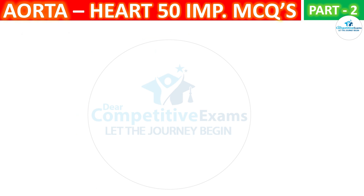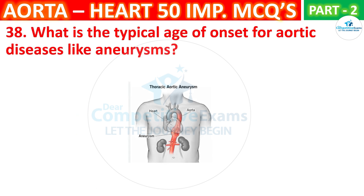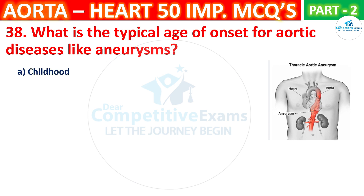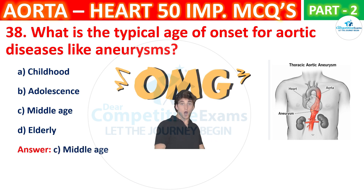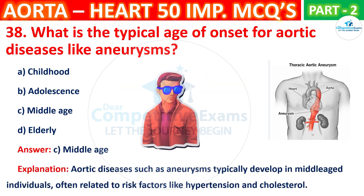Question No. 38. What is the typical age of onset for aortic diseases like aneurysm? The options are: Childhood, Adolescence, Middle age, or Elderly. The correct answer is C, that is middle age. Aortic diseases such as aneurysms typically develop in middle-aged individuals, often related to risk factors like hypertension or high cholesterol.